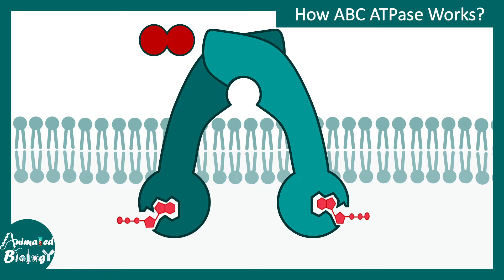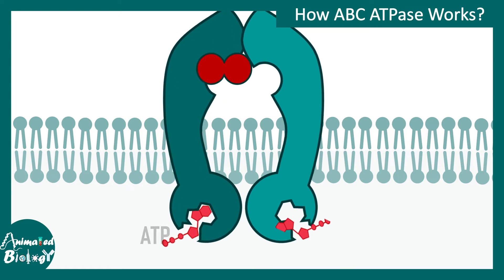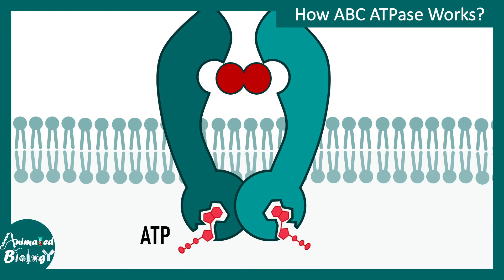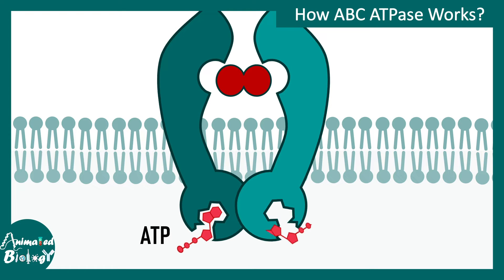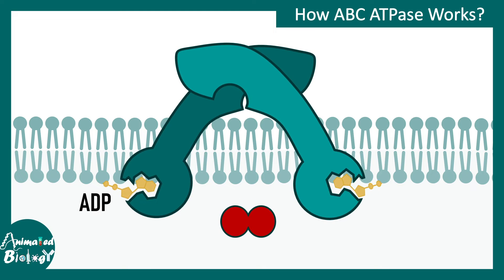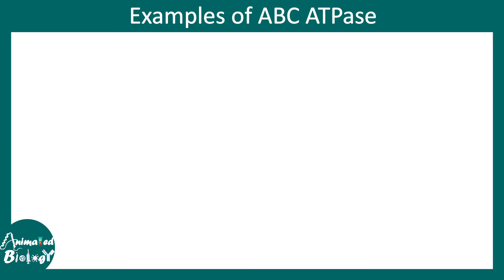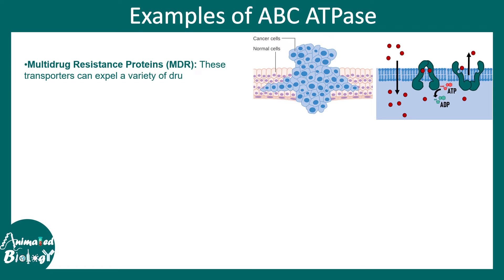This is how an ABC transporter works. You can see these ABC transporters embedded into the membrane. The ligand, shown in red, binds to the ligand binding domain. ATP binds to the nucleotide binding domain, ATP hydrolysis occurs, ATP becomes ADP, and that triggers a conformational change which brings the molecule inside the cell. This is broadly how ABC transporters work.